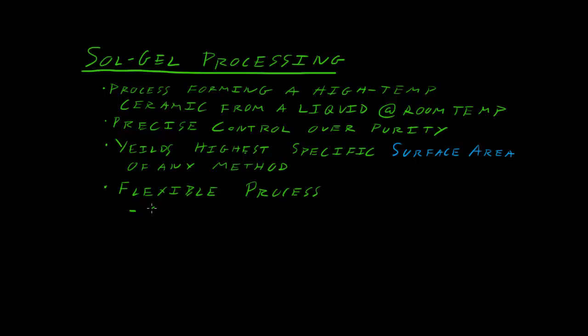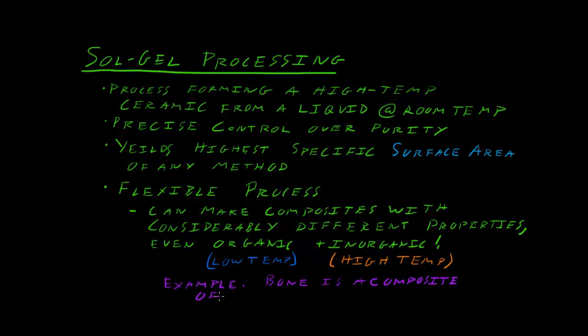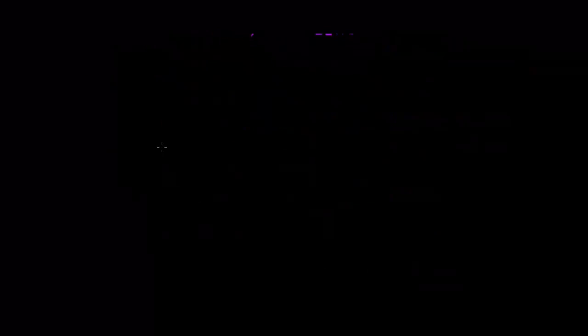And it is a flexible process. You can make all kinds of different materials using sol-gel. And specifically, you can make composites that are otherwise not an option, not even possible. These composites can have very different properties, or combine two materials that have very different properties. Even combining organic and inorganic materials, which is really hard to do, because organics require low temperature in order to blend, and inorganics usually require high temperature processing. As an example, bone. Bone is a composite of hydroxyapatite, which is an inorganic, and a flexible organic called collagen. That's why your bone can be both stiff and strong, yet be able to survive shocks.